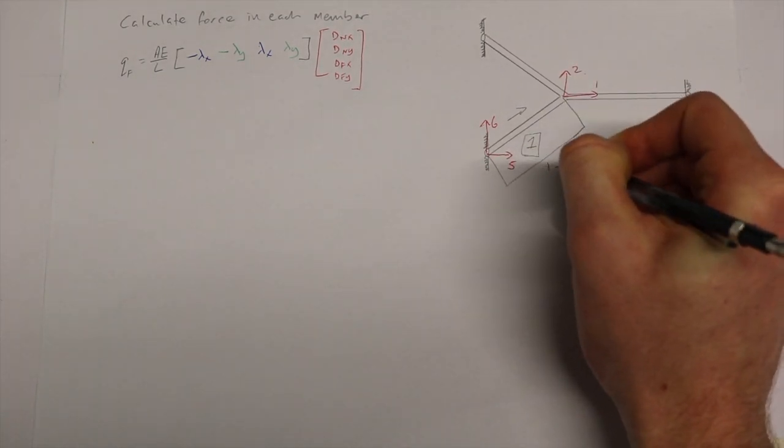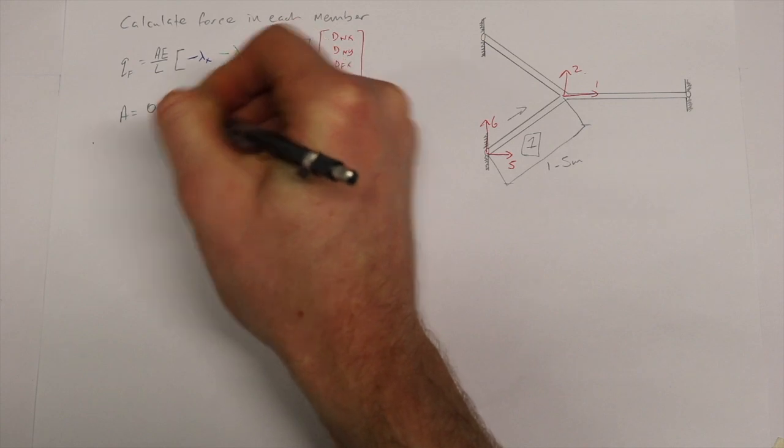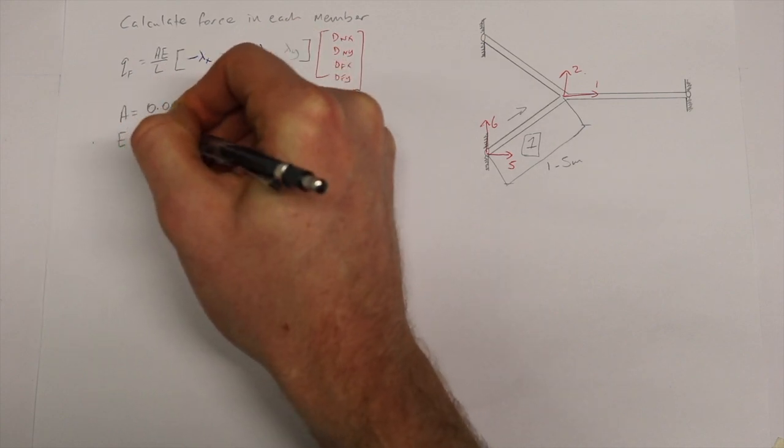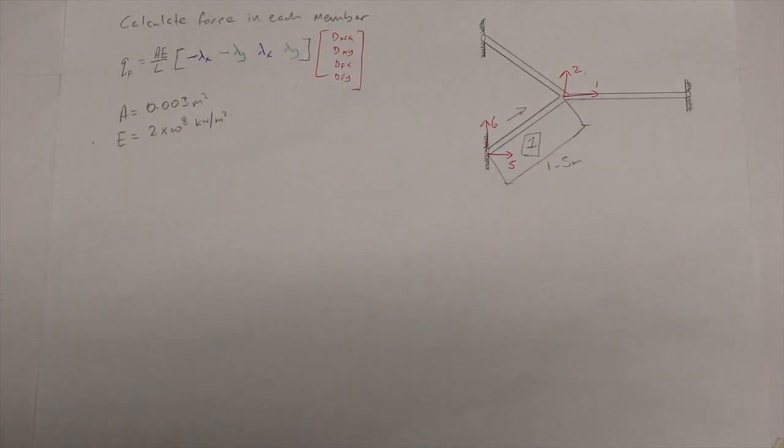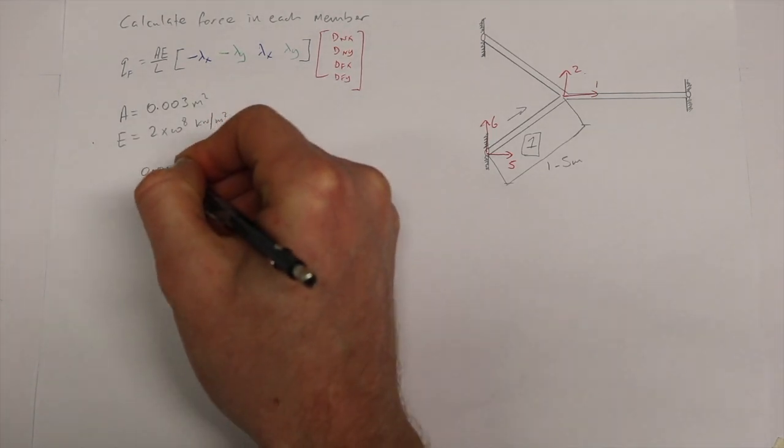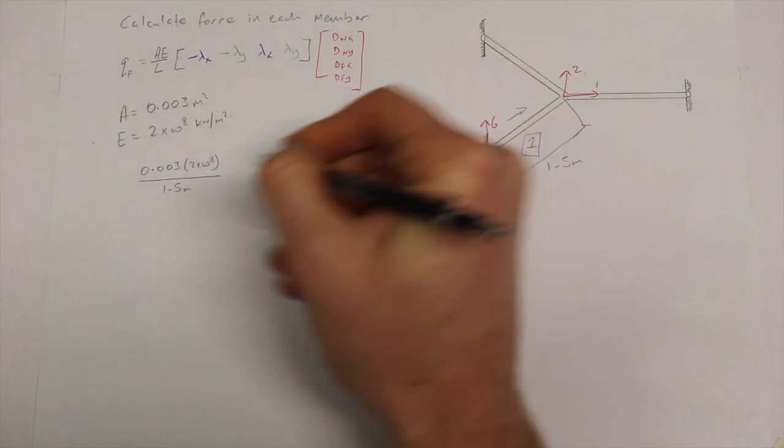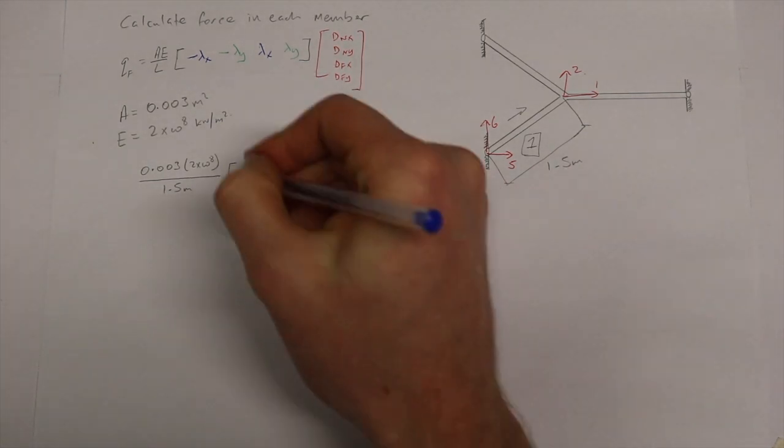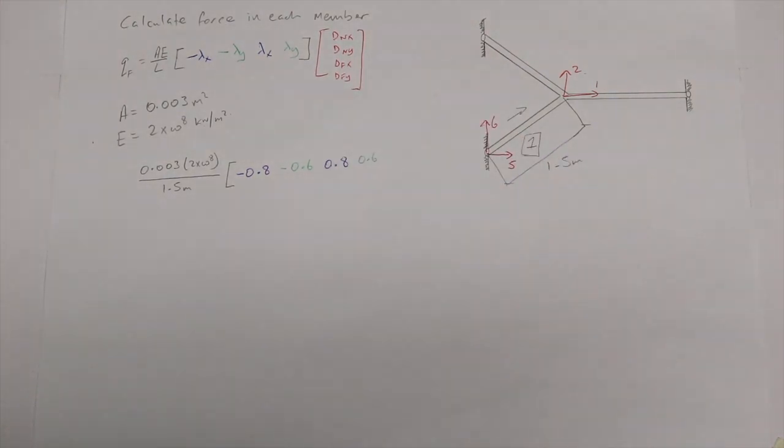As we know already the length of our member is 1.5 meters. And our A and E are the same from previously. A equals 0.003 meters squared and E is 2 by 10 to the 8 kilonewton per meter squared. So applying numbers to this equation to calculate the force in each member we get 0.003 by 2 by 10 to the 8 over 1.5 meters. Using our lambdas again it's minus 0.8, minus 0.6, 0.8 and 0.6. This is multiplied by our near and far degrees of freedom.